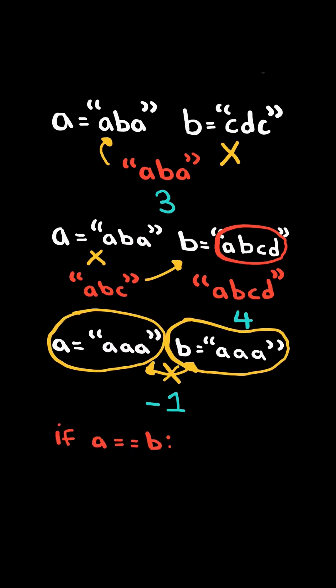First, if A and B happens to be equal, so there is no uncommon subsequence, so we return negative 1.